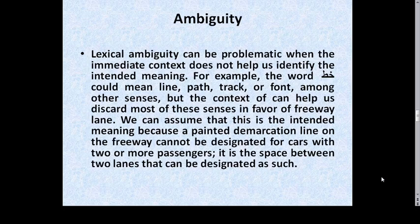Ambiguity: Lexical ambiguity can be problematic when the immediate context doesn't help us identify the intended meaning. For example, the word خط could refer to 'line,' 'path,' 'track,' 'front,' or 'font' among other senses. But context can help us discard most of these senses in favor of 'freeway lane.' We can assume this is the intended meaning because a painted demarcation line on the freeway cannot be designated for cars with two or more passengers — it's the space between two lanes that can be designated as such.